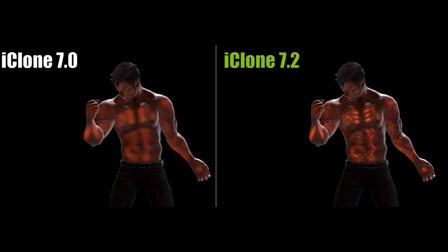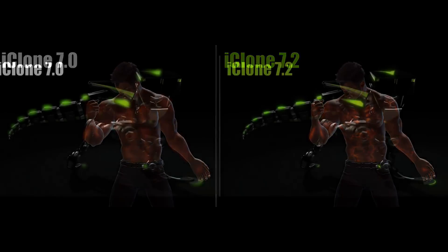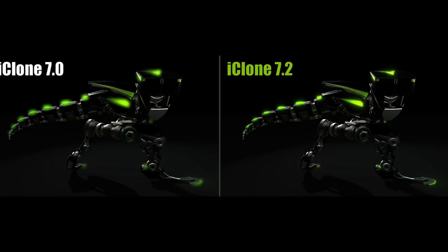Here you can see the side-by-side comparison: 7.2 versus previous versions with the character flexing his muscles. We also have this image of the robot where the glowing on the armor is a lot more faded on the left in 7.0, and a lot sharper and more detailed in 7.2 on the right.